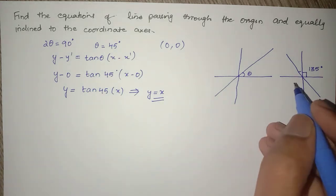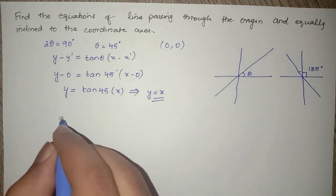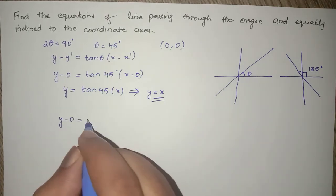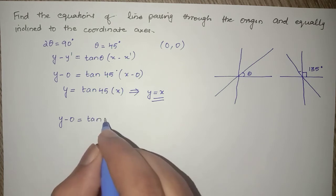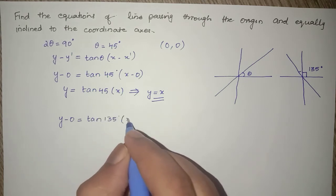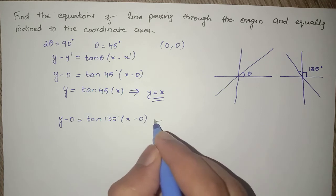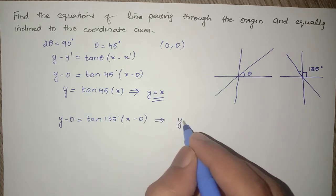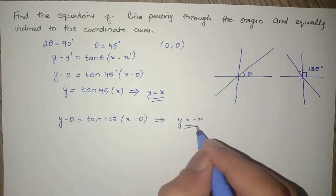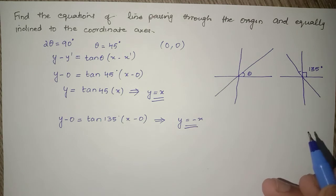So the equation of this will be y - 0 = tan(135°)(x - 0). This equals y = -x. So these are our equations of line. Thanks for watching.